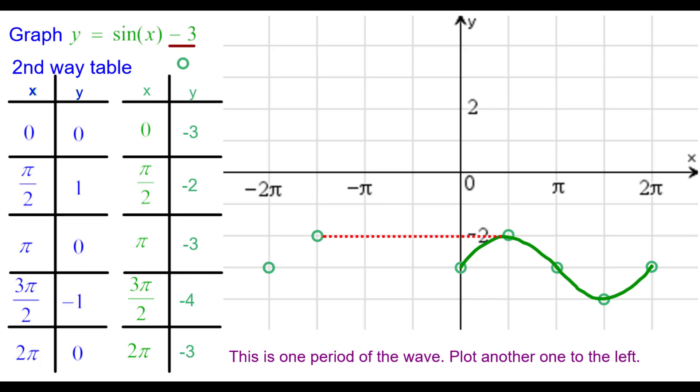The max will go back a period, which is 2 pi, to negative 3 pi over 2, negative 2. At that point of inflection, we go back to negative pi, negative 3. This one goes back 2 pi. And then we connect the points as another sine wave. Concave down, then concave up.